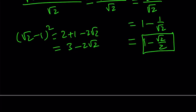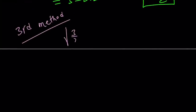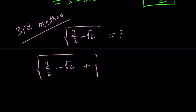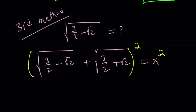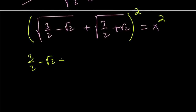Let's take a look at the third method. Our expression is √(3/2 minus √2). To simplify this, I'm going to think about the conjugate of this expression. The conjugate is formed by changing the sign, so I'm going to add the two conjugates — √(3/2 minus √2) plus √(3/2 plus √2) — and set it equal to x. Squaring both sides using the square of a sum on the left-hand side gives: (3/2 minus √2) plus (3/2 plus √2) plus 2 times √(9/4 minus 2) equals x².